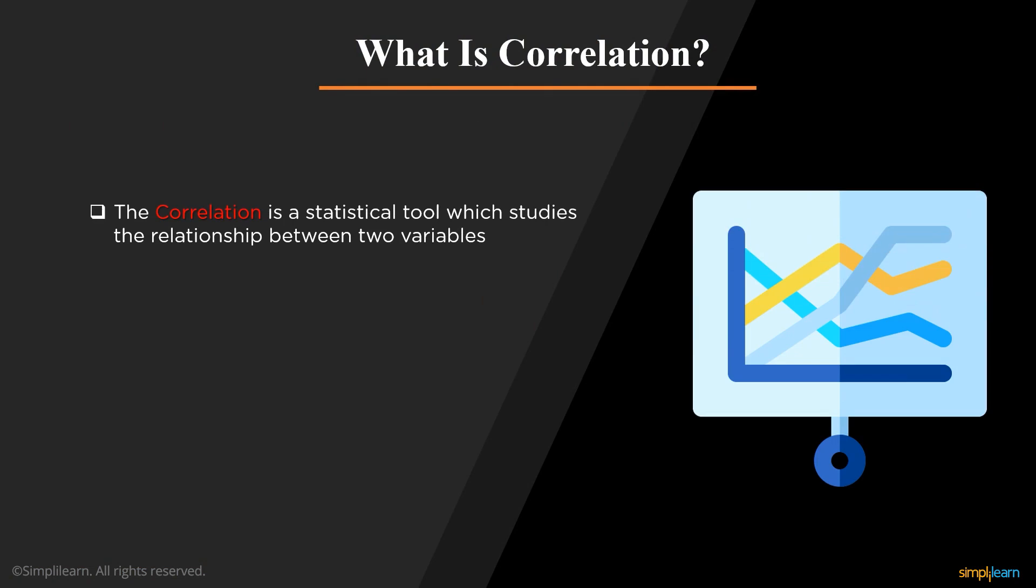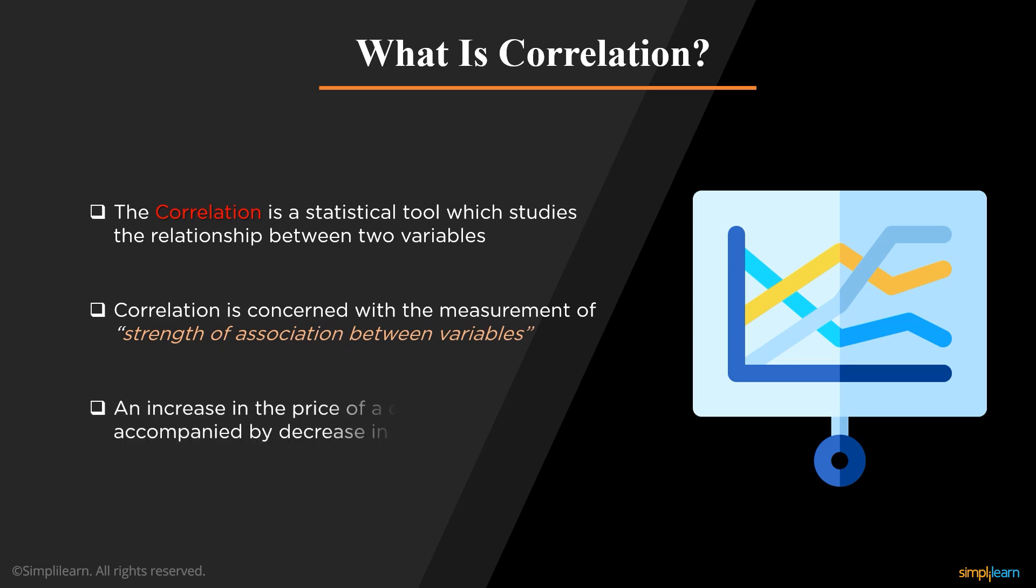What is correlation? A correlation is a statistical relationship between two entities. It measures the extent to which the two variables are linearly related. In simple words, it is the measurement of strength of association between the two variables. For example, an increase in the price of commodity is always accompanied by decrease in demand. The value of the correlation always lies between minus 1 to plus 1.